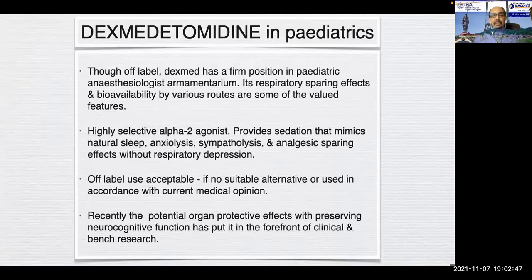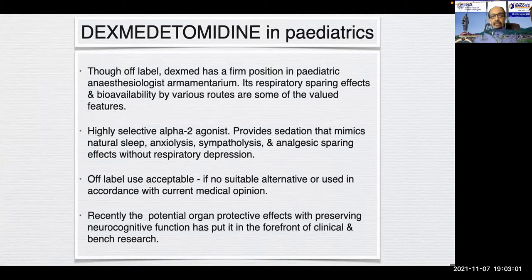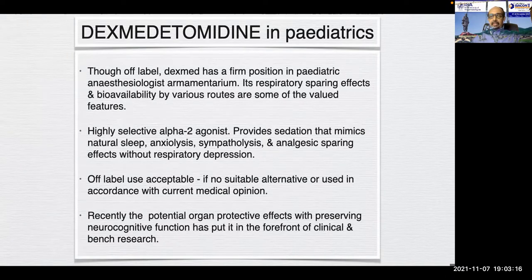Coming to dexmedetomidine in pediatrics. At the off-label level, dexmedetomidine has a firm position in the pediatric anesthesiologist's armamentarium. Its respiratory-sparing effects and bioavailability by various routes are valued features. As a highly selective alpha-2 agonist, it provides sedation that mimics natural sleep, anxiolysis, analgesia, and analgesic-sparing effects without respiratory depression. The off-label use is acceptable if no suitable alternatives are available, and recently its potential organ-protective effects with preserved neurocognitive function have put it at the forefront of clinical research.